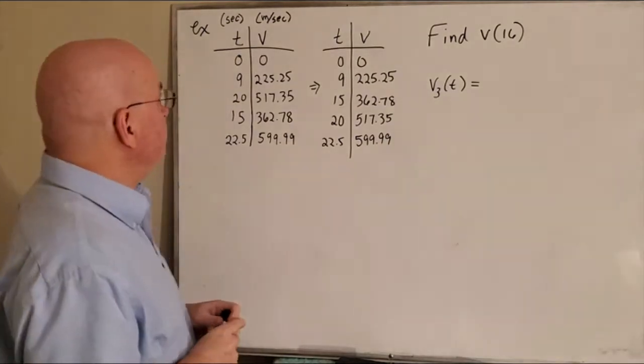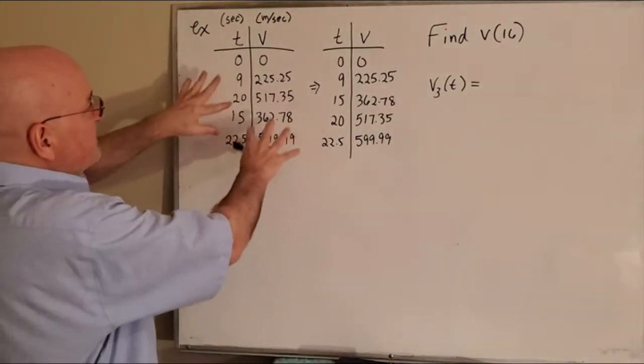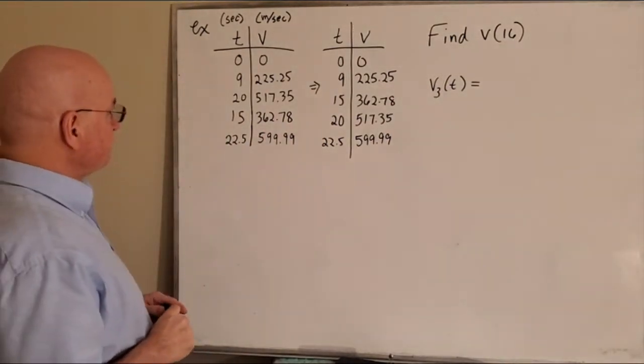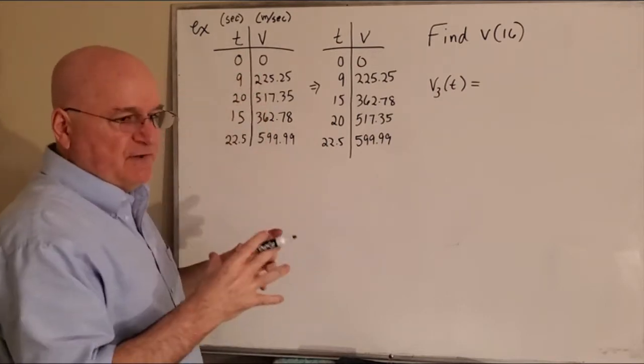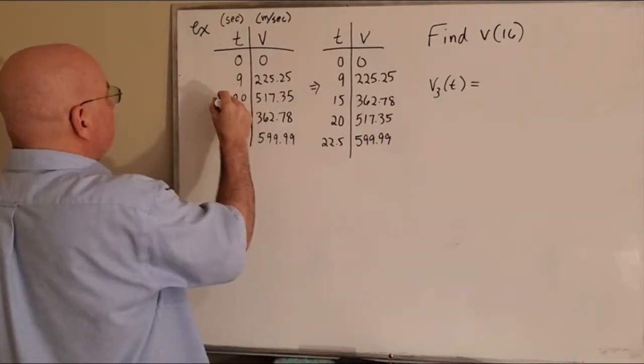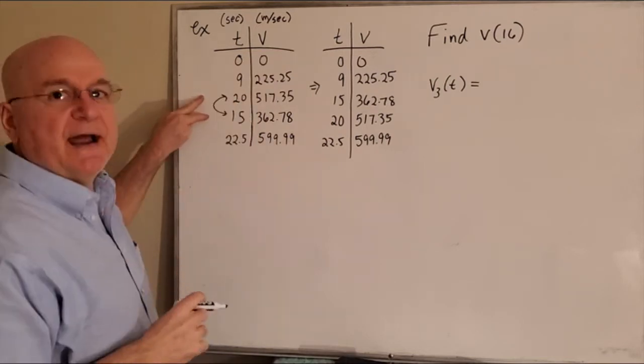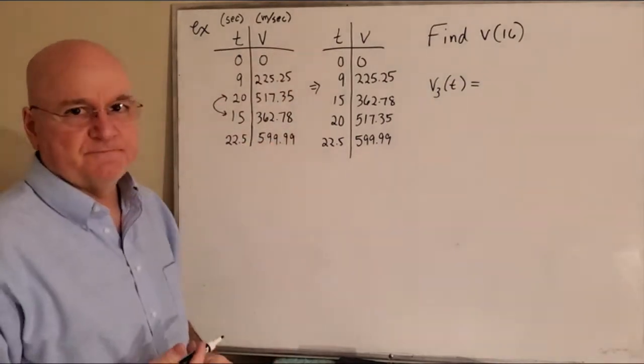At time zero, the velocity is zero. Notice that these graphs have exactly the same data, these charts do. The only difference is when you tabulate your data, you need to sort it. So I noticed these two are not in order, so I listed them in order. That's the only difference between here and here.